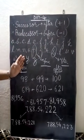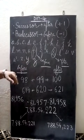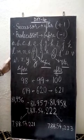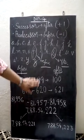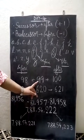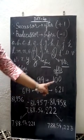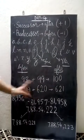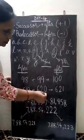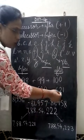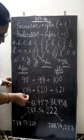Now, here to find the successor and predecessor of some numbers, I have taken a few examples. First, I have chosen the two-digit number 99. So 99 plus 1 is 100, and 99 minus 1 is 98. Again, for the three-digit number 620: 620 plus 1 is 621 — that is the successor. 620 minus 1 is 619 — that is the predecessor.